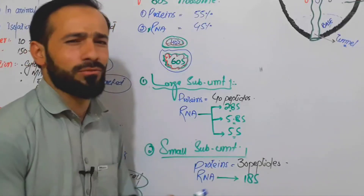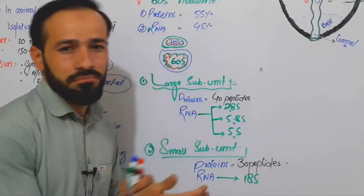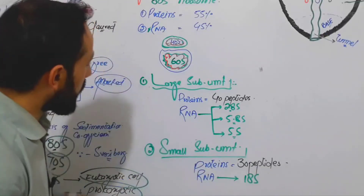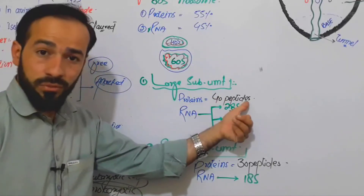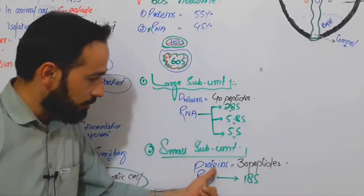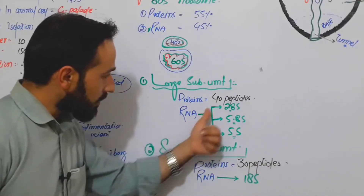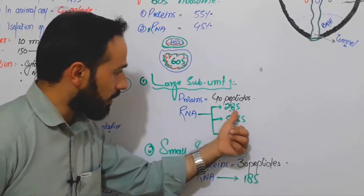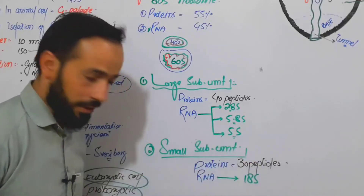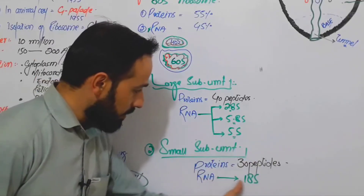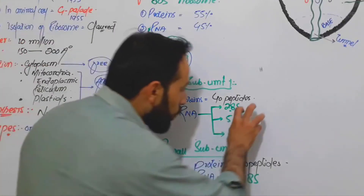So to summarize: the large subunit contains proteins composed of 40 peptides, and the small subunit contains proteins composed of 30 peptides. The large subunit contains three types of RNAs — the 28S, the 5.8S, and the 5S — while the small subunit contains one type of RNA, the 18S.